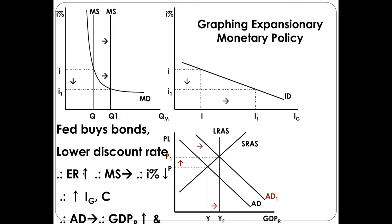When the level of investment went up, that pushed up aggregate demand. On our AD-AS graph, we originally had an equilibrium price level P and equilibrium output Y, which wasn't quite at full employment output. But with the increased investment, aggregate demand increases and moves back to full employment output. That pushed up the price level, pushed up output, and you're back at full employment output. You got out of recession using this expansionary monetary policy.